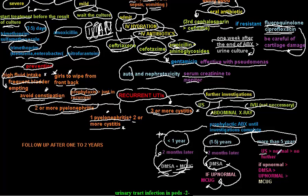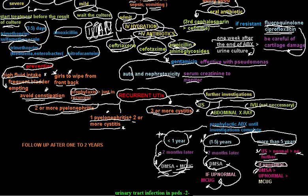In patients more than five years old, we do ultrasound; if it is normal, no further investigation is needed. If abnormal, we do a DMSA scan; if DMSA scan is also abnormal, then MCUG is indicated. To summarize: below one year — ultrasound, X-ray, DMSA scan, and MCUG at two months. One to five years — ultrasound, X-ray, then DMSA scan, then MCUG if abnormal. More than five years — ultrasound, then DMSA scan if abnormal, then MCUG if DMSA abnormal.